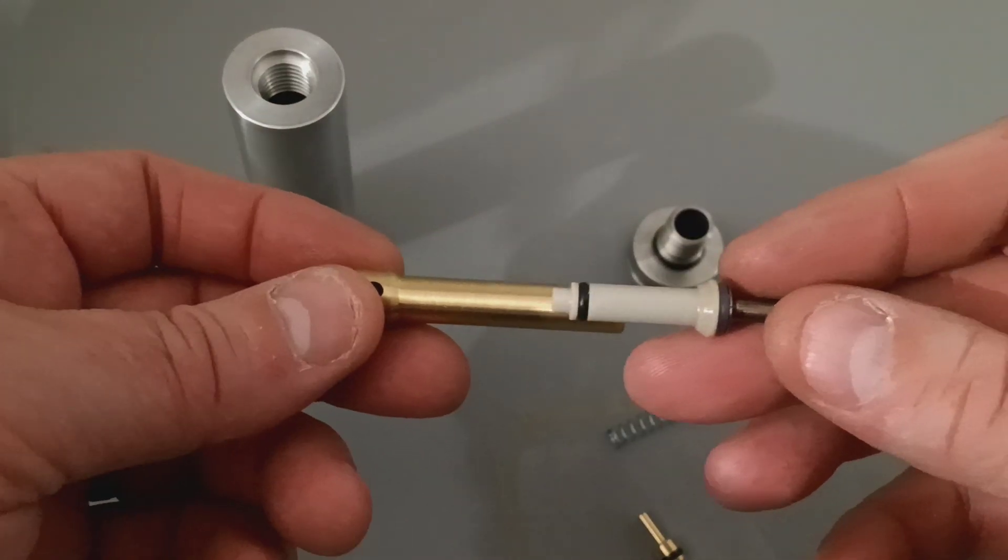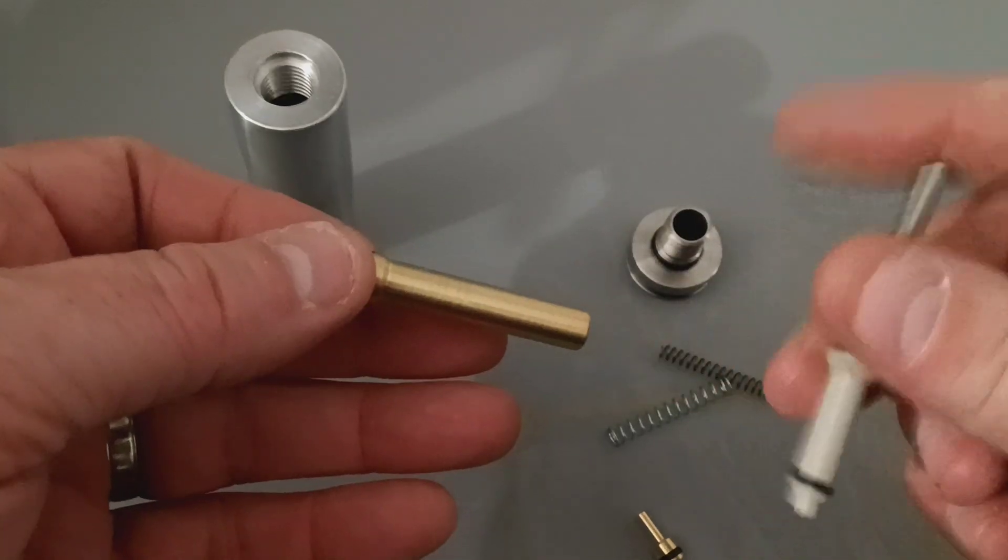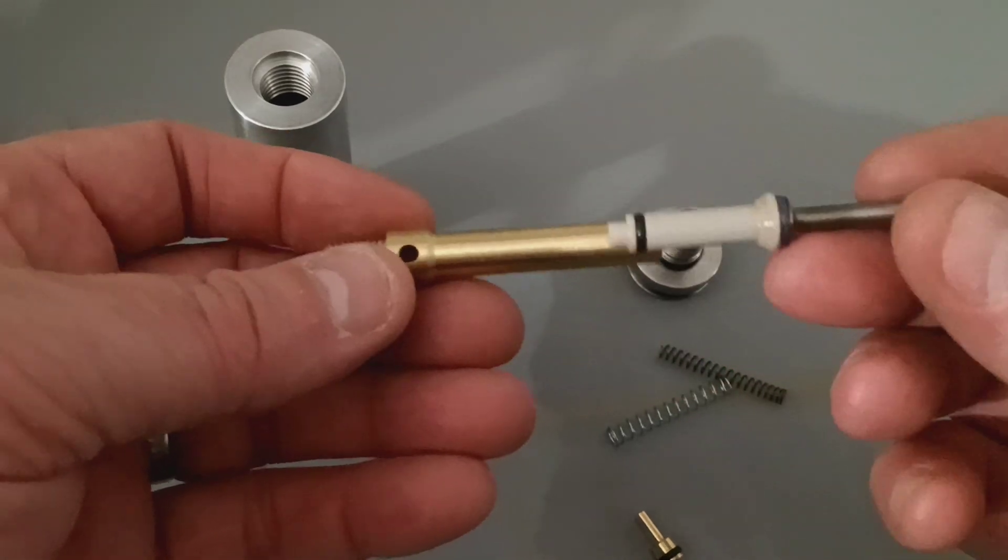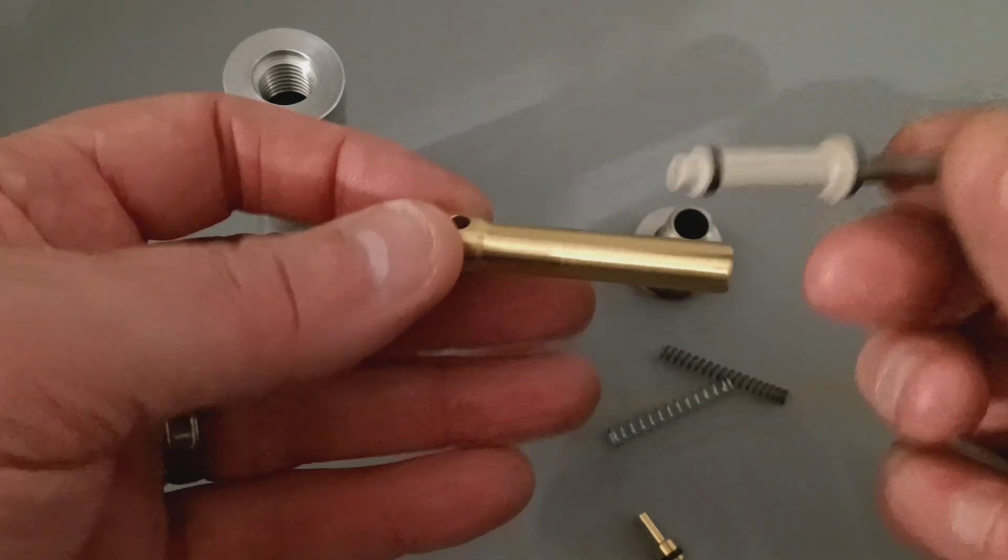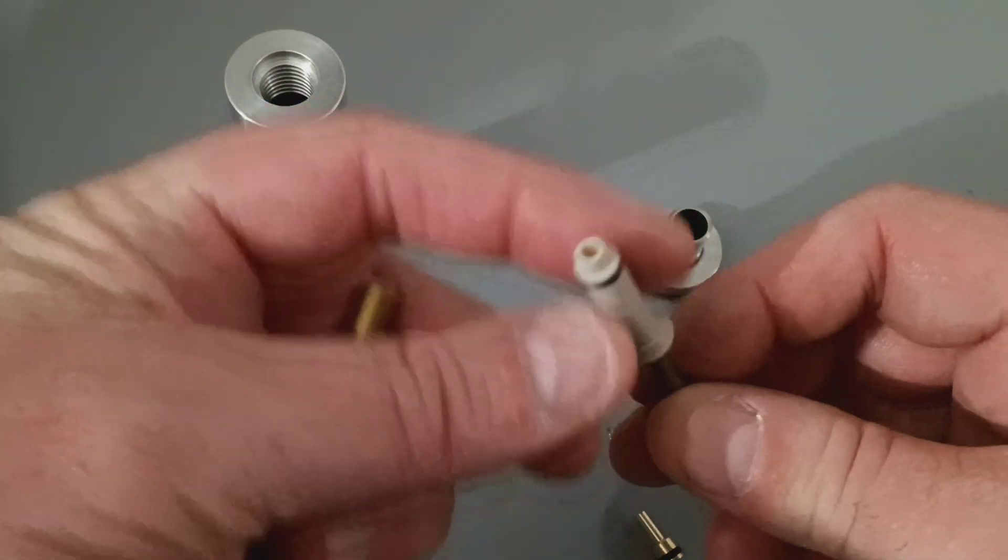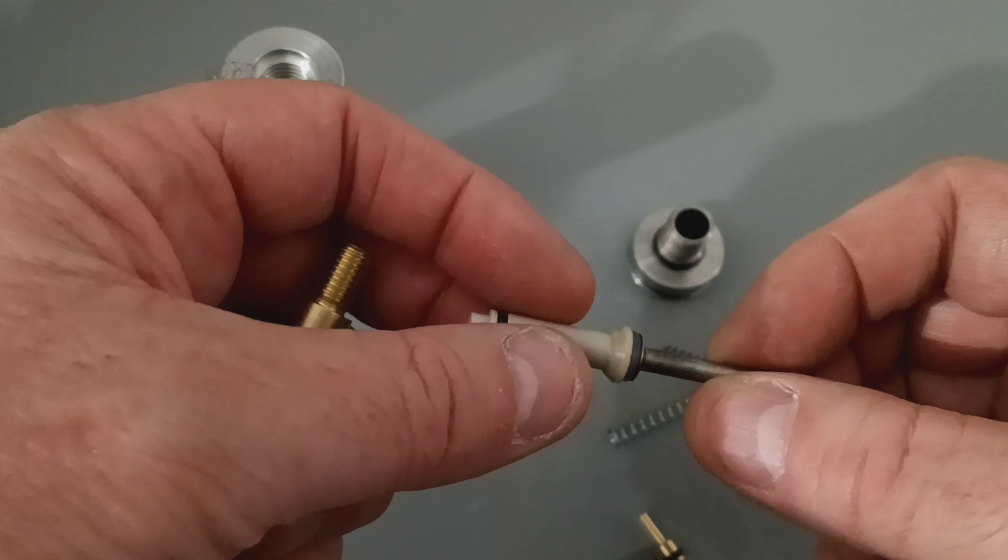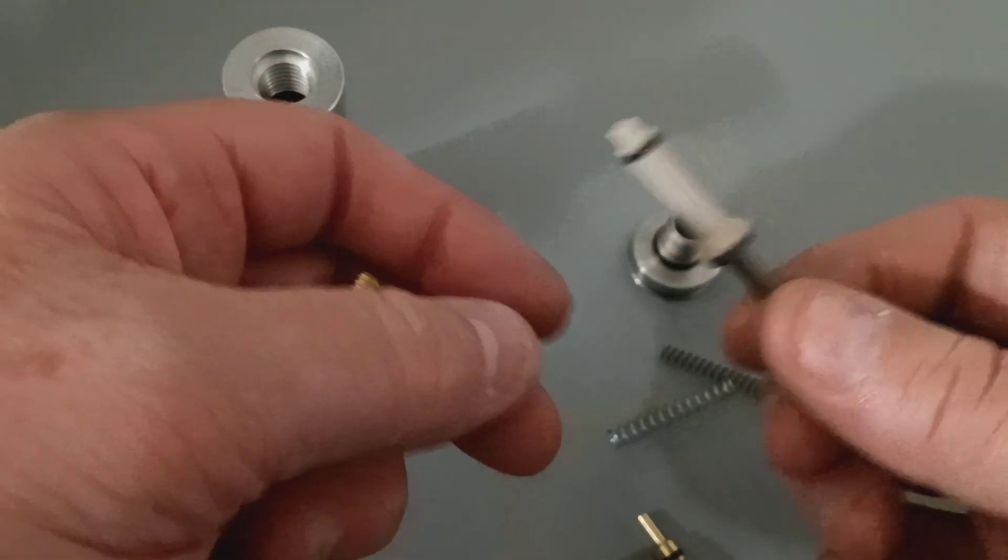So when this is assembled, it slips in there like that. This protrudes out the back of the exhaust valve and this whole section. And 75% of the area of the stem, the stem head, is at atmosphere.